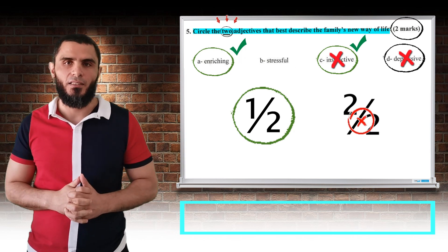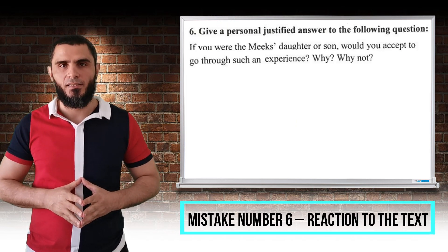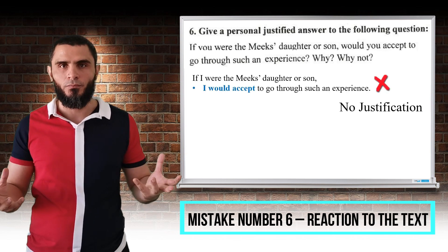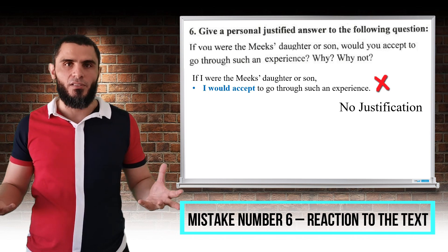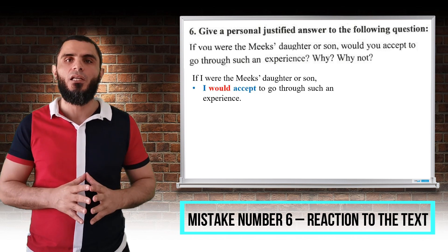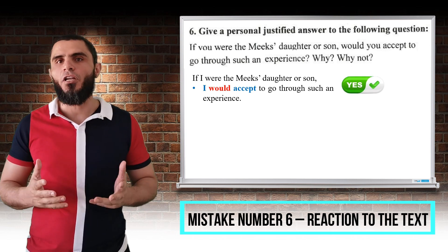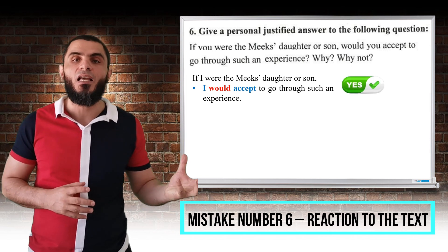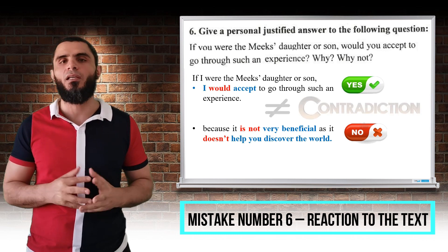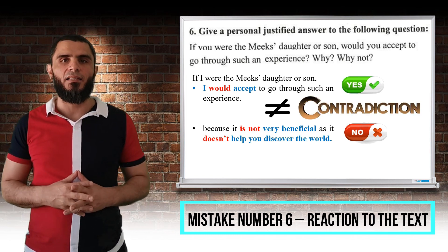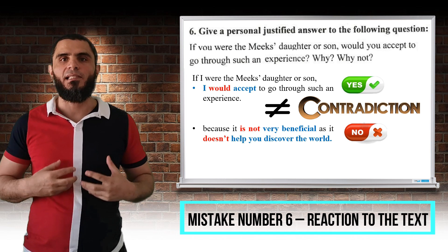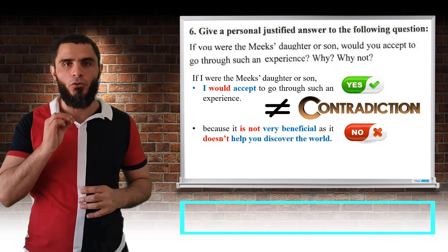Mistake number six: the reaction to the text. In the personal justified question, students sometimes answer with yes or no without justifying their answers. Other times, their justifications are not coherent with their answers — for example, answering yes but giving an explanation that justifies a no, which is a contradictory answer. They should also keep in mind that a reaction is not repeating the words of the text (copy and paste) — it is expressing an opinion using their own words.